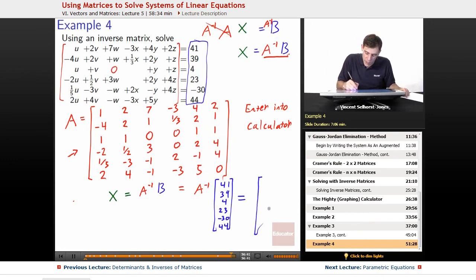And what does this wind up coming out to be? This comes out to be the deliciously simple negative 5, 4, 1, negative 3, 6, negative 1.